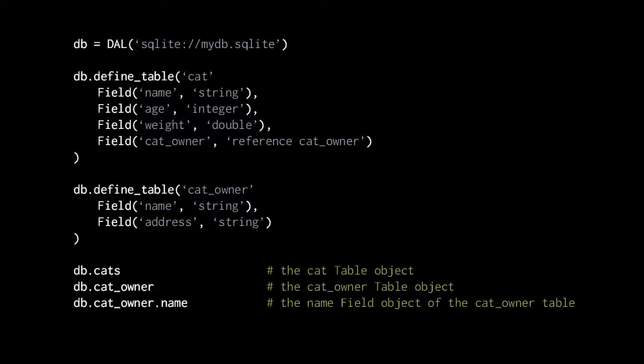Only when we use define_table to create a new table with a new name does the database actually create a new table. Likewise, we can modify one of our existing tables by simply removing one of the fields from the cat table or adding in another field. The DAL will then see that the table differs from how it's defined in the database directory, and so it will actually alter the table in the database, which in SQL is done with the ALTER TABLE statement.